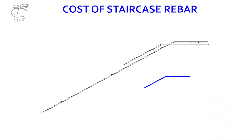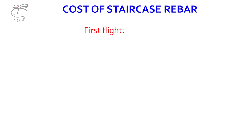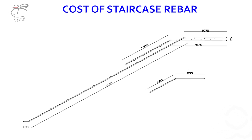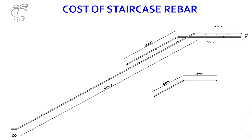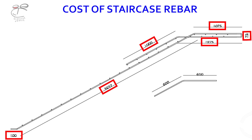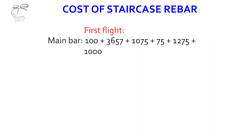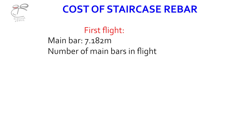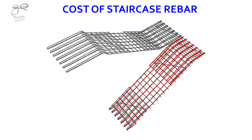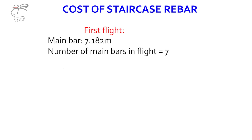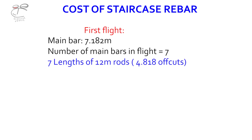For the main bars, the details and dimensions for the rebar are added up, and in this instance I'm getting 7.182 meters for one bar. How many bars are in the first flight? We have about seven.